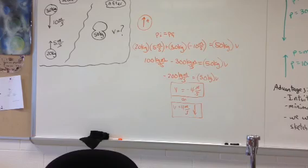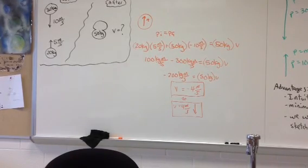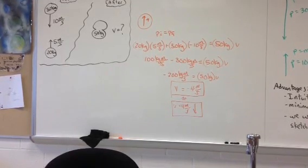And then equals 50 kilograms of total mass times the velocity. Then they multiply the numbers together and you get 100 minus 300 equals 50 times V. Negative 200 equals 50 times V. And then V is equal to negative 4.